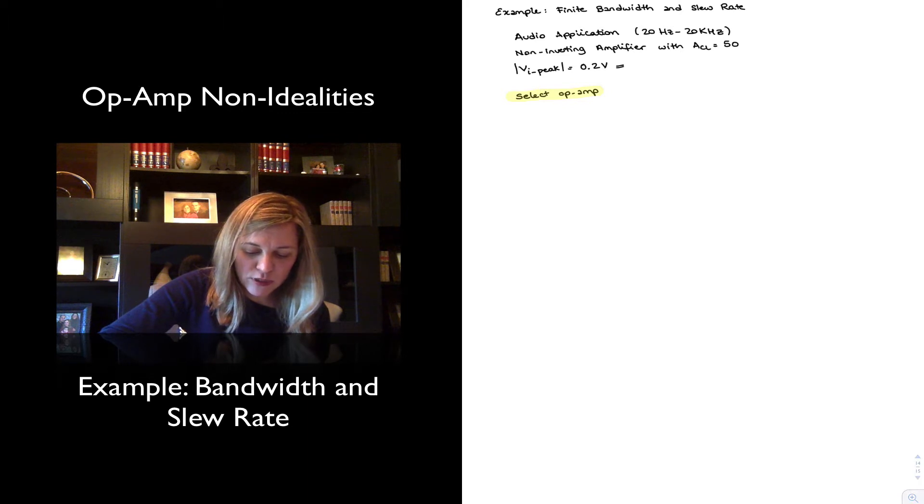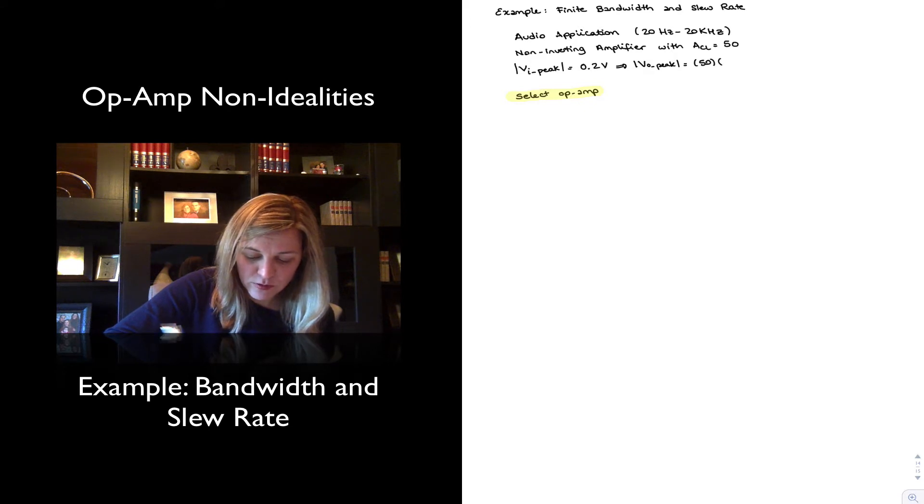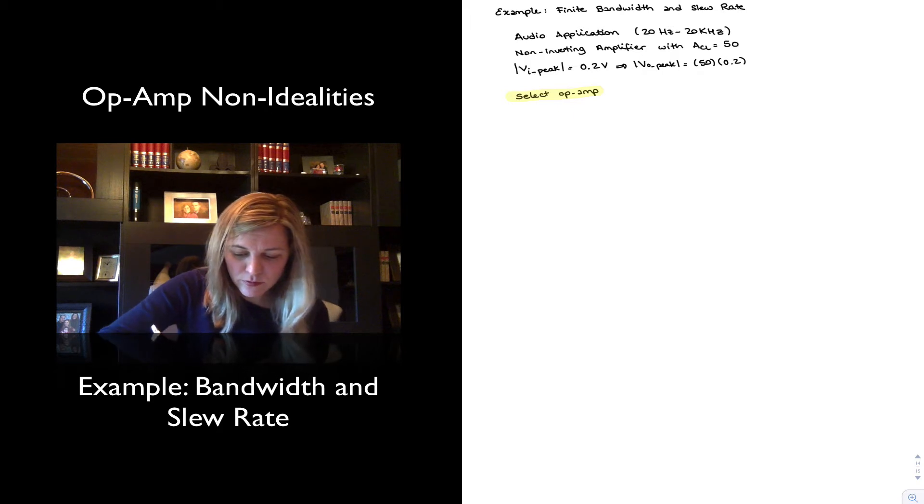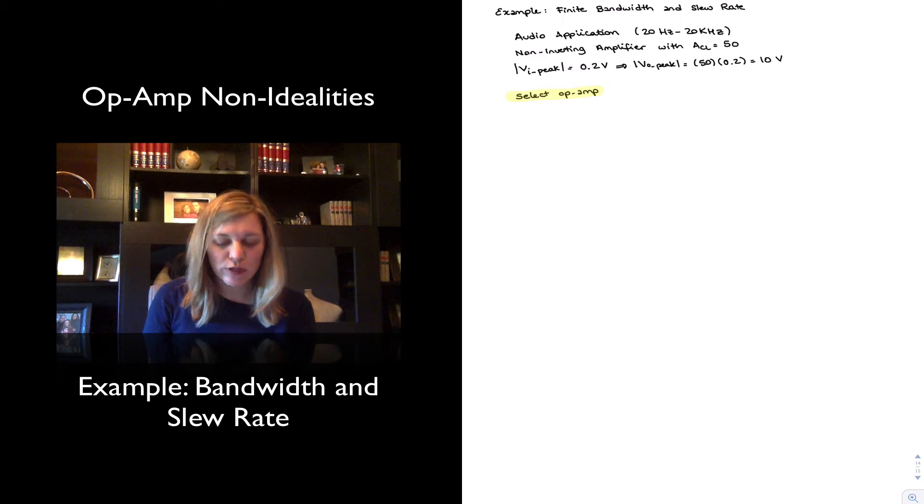Obviously, our peak output voltage in that case is going to be the gain, ACL, which is 50 times the peak input voltage, which is 0.2, and so 10 volts for our peak output voltage.